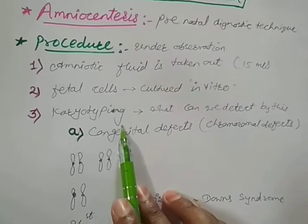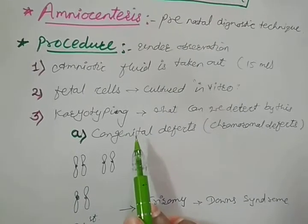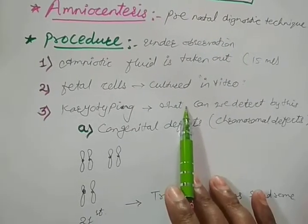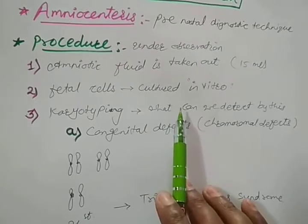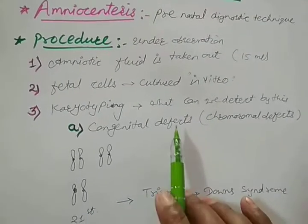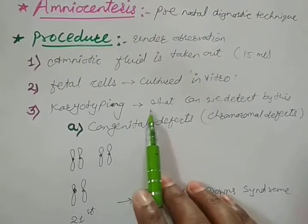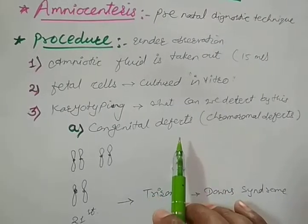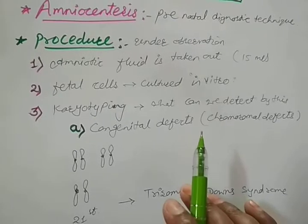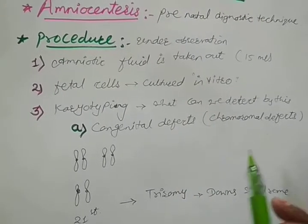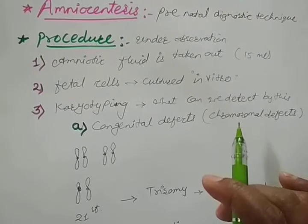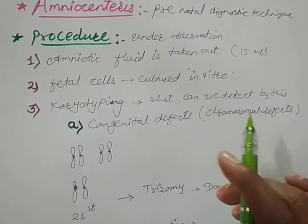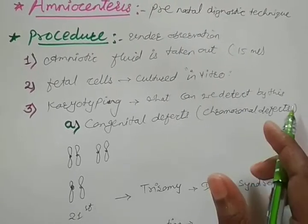The third step is called karyotyping. What is karyotyping? All these cells are having mitotic division, and in mitotic division the genetic material is the same. In karyotyping, cell division is arrested in metaphase, so the chromosomes are thick. These chromosomes are then stained, pictures are taken, and they are arranged in a systematic manner.